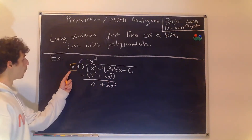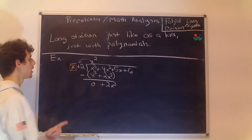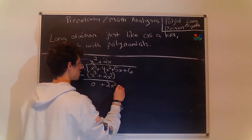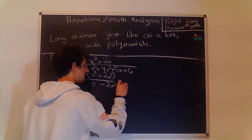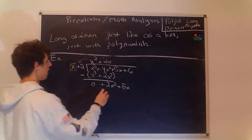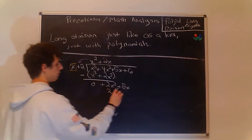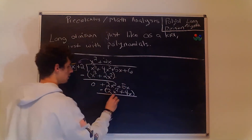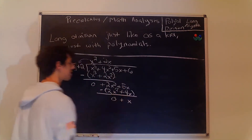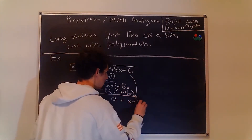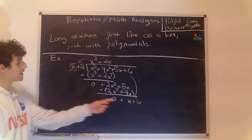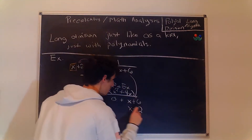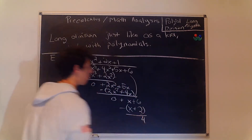Then we want to play the whole game again. What can we multiply x by to get 2x squared? That's going to be 2x. Then 2 times 2x gives us 4x. We bring the 5x down, giving us 2x squared and 4x. We group them and subtract, giving us 0 and x. We bring the 6 down. Now what do we multiply x by to get x? That's just 1. So we'll have x plus 2 here.